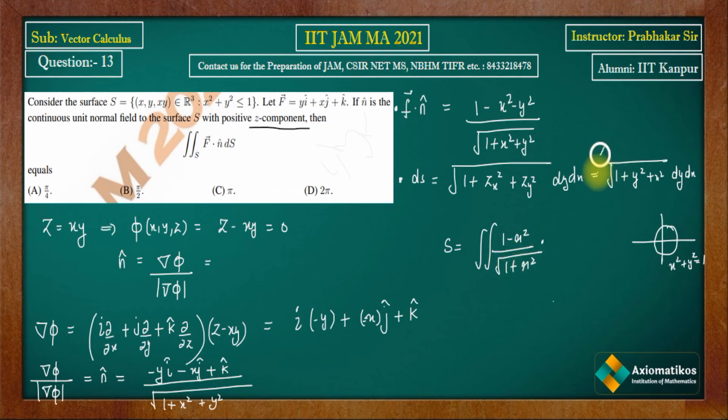Now in place of surface element dS, you have to put this. This was f vector dot n cap. In place of surface element, you'll put this, so under root 1 plus r² will come. Because we have to evaluate over the entire circle, and in place of dy dx, how much will come? r dr dθ will come.